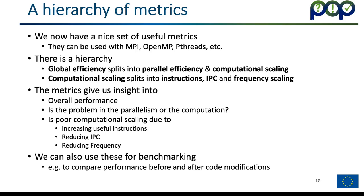Using just this simple set of metrics, we can get insight into the overall performance — whether there's a problem in the parallelism, the computation, or perhaps both — and whether poor computational scaling is down to increasing instruction count, reducing instructions per cycle, or reducing frequency. These metrics can also be used for benchmarking, for example to compare performance before and after code modifications, and they're very useful for that.